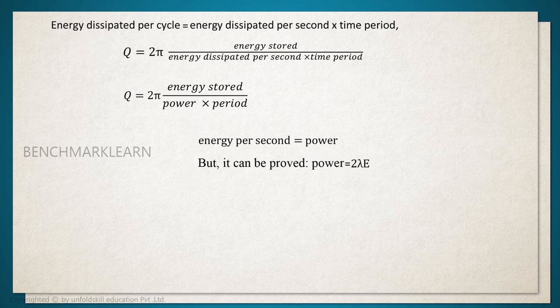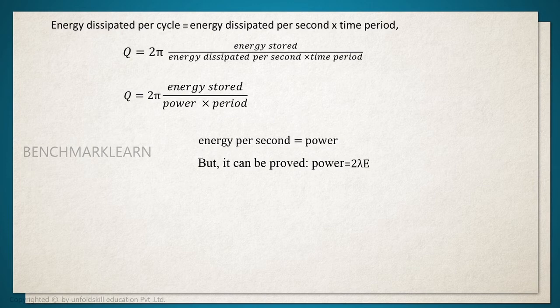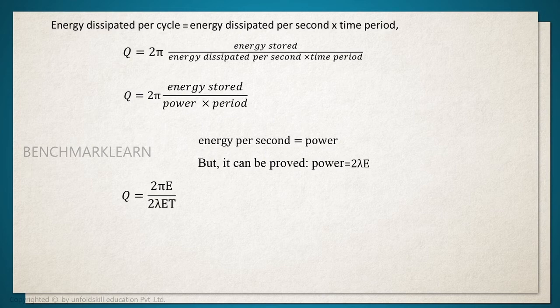We know that the power is equal to 2λE. Therefore, the Q factor can be written as Q equal to 2π into E divided by 2λE into T.